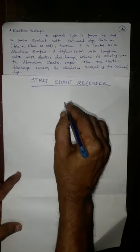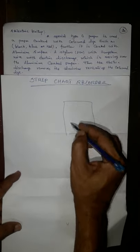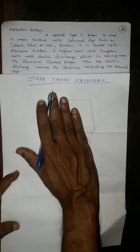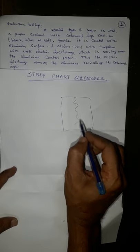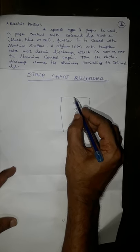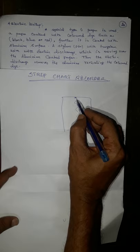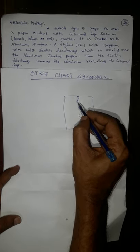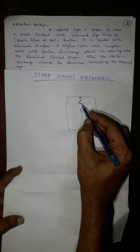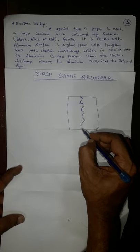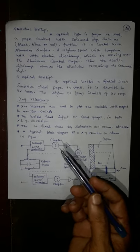For example, here this is a paper fully coated with some color like blue. So the stylus will be moved there, this electrical writing will discharge that electric charge and will remove the aluminum. Therefore, this portion only blue color or red or black. This is the electrical writing.